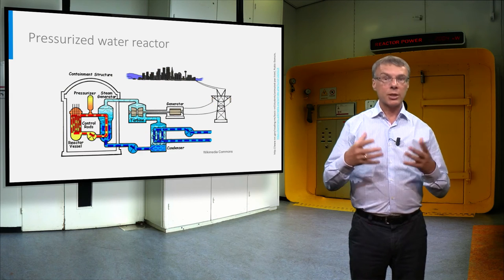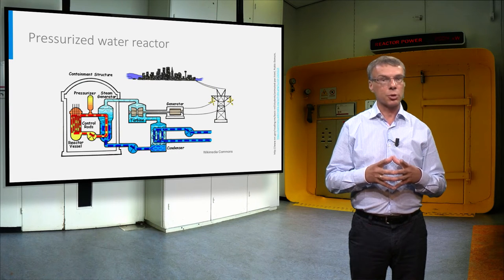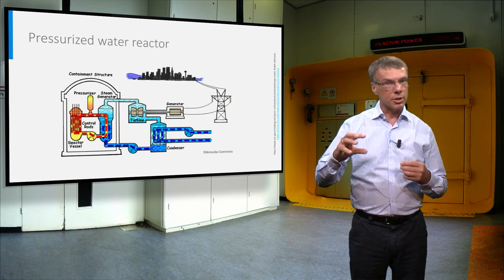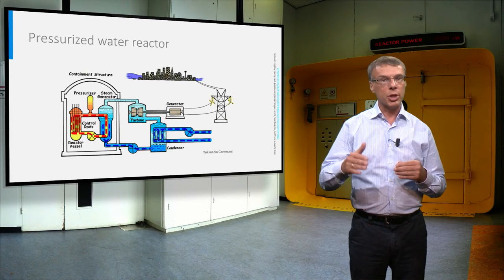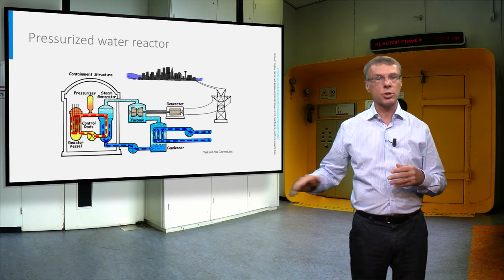In addition, there is boric acid dissolved in the primary water, acting as a neutron absorber. The concentration of it can be reduced slowly during operation to compensate for the build-up of fission products in the fuel and for the reduction of the fissile isotopes during burn-up.